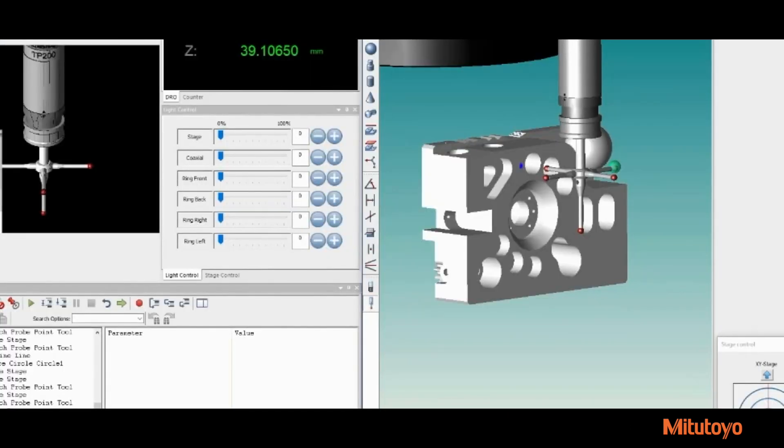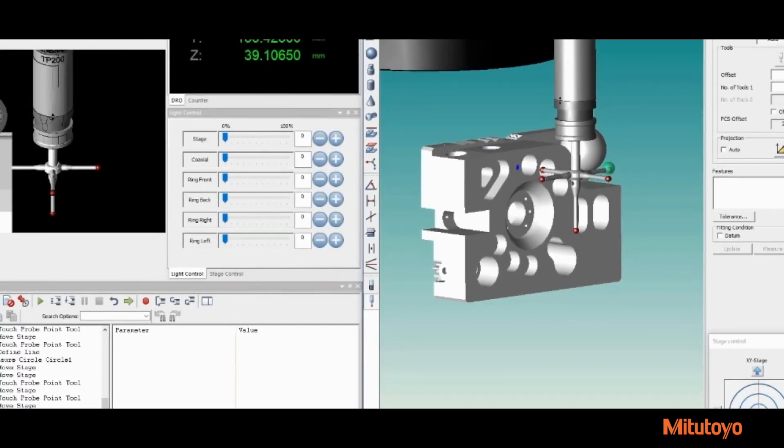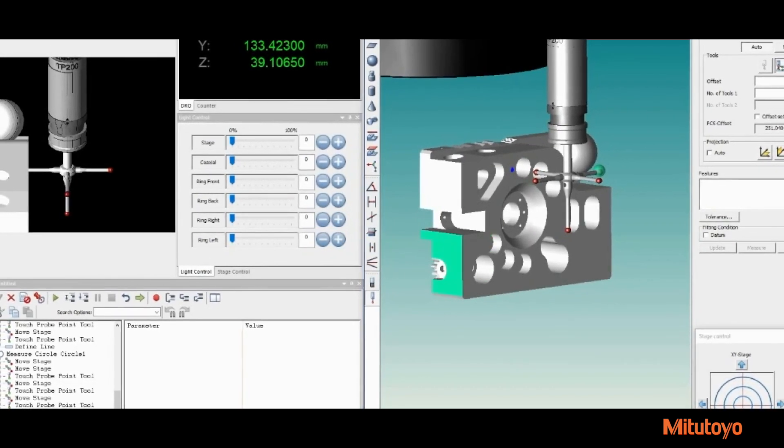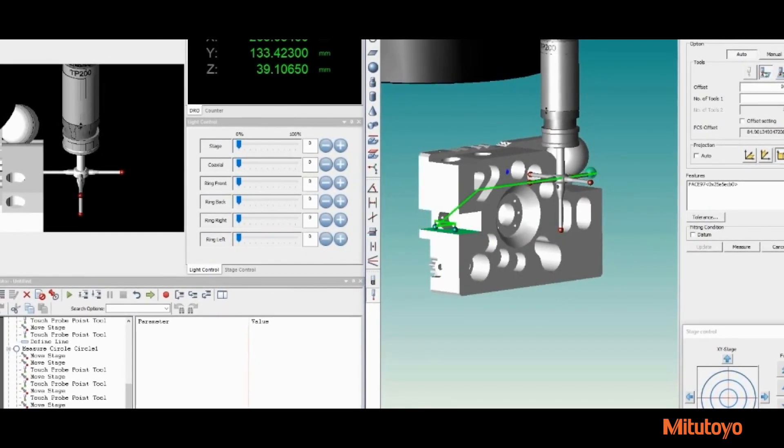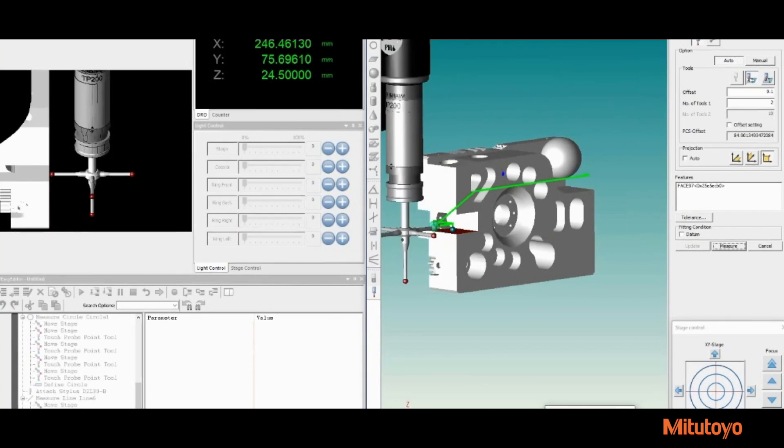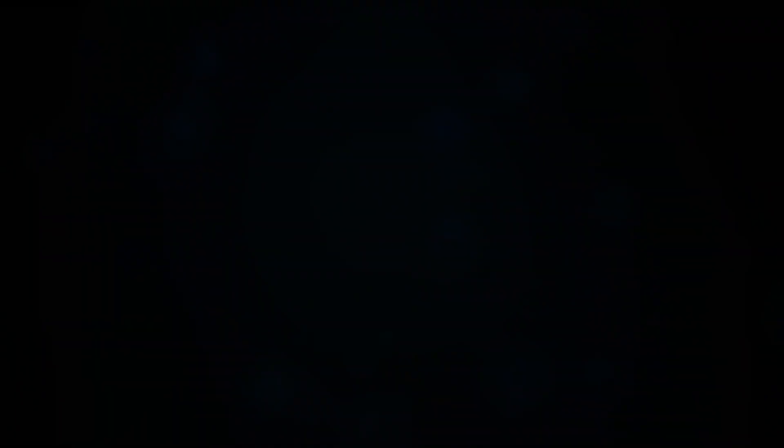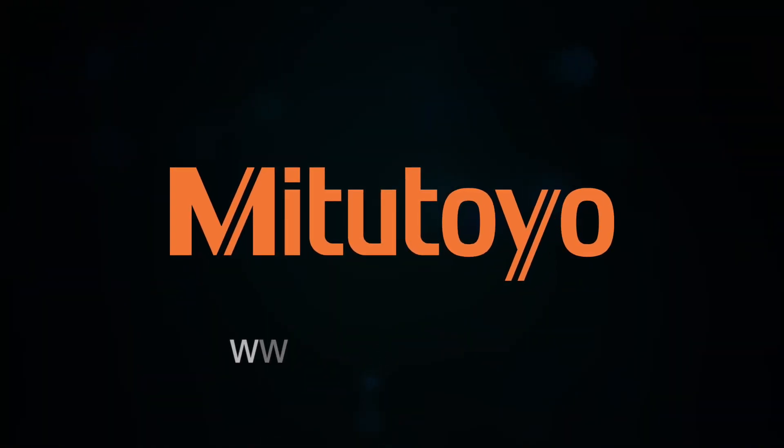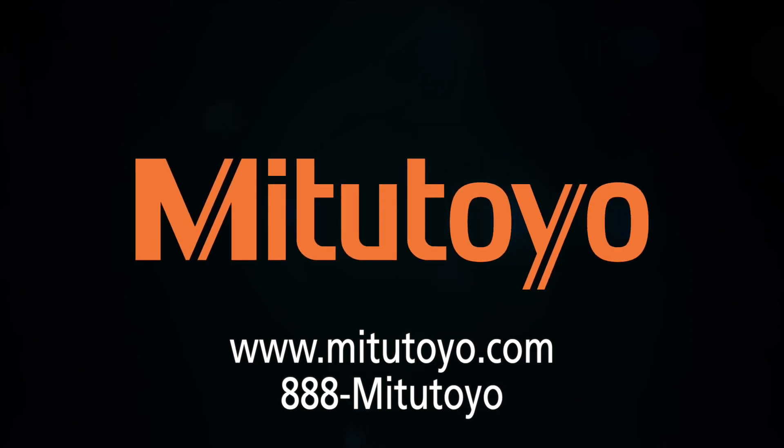Collision check, enabled by default, automatically avoids collision between the probe and the part, greatly simplifying part programming in the online or offline mode. If you have any questions or want to learn more about the latest QVPAC software and QV3D CAD, please contact your Mitsutoyo representative or preferred Mitsutoyo distributor.